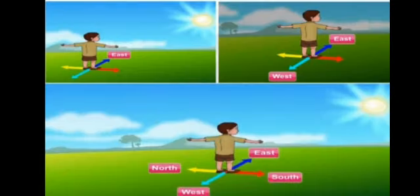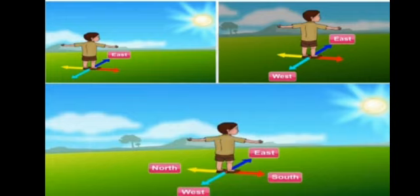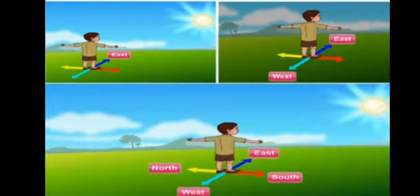Students, look at the picture. The boy is standing in front of the Sun, stretching his hands outwards. In front of the Sun, that is, the East side. Opposite to East is the West side. To the left hand of the boy is North, and to the right hand of the boy is South. So, there are 4 main directions: East, West, North and South.